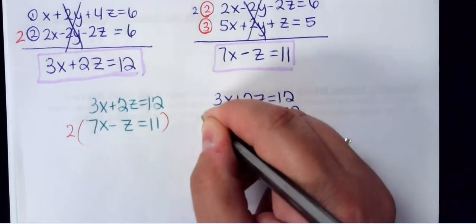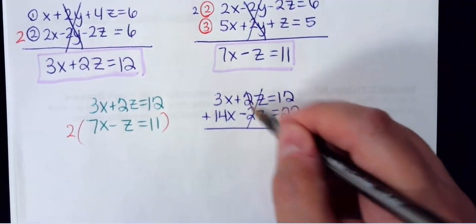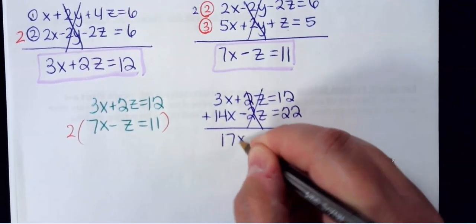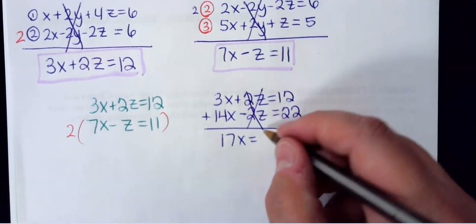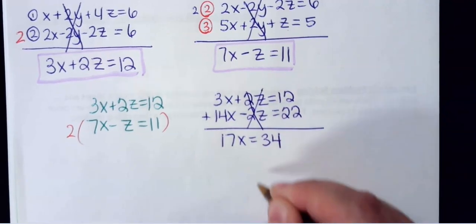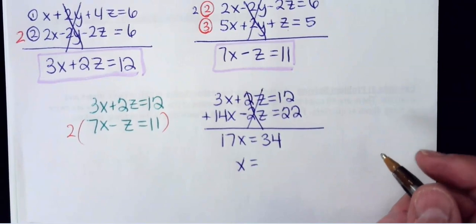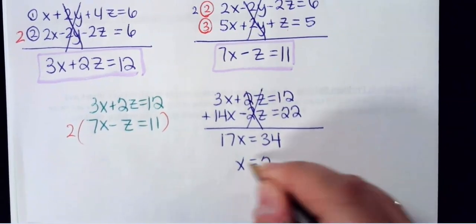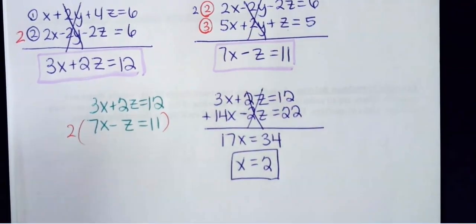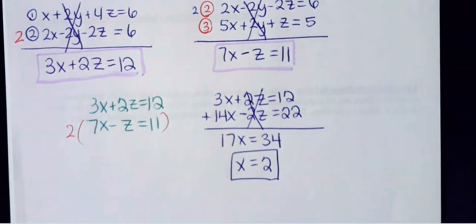The z's are now opposite, so I add the lines: 3x plus 14x gives 17x, and 12 plus 22 gives 34. So x equals 2 — a nice number. I promise for your problems I won't give anything with decimals; you'll get nice integers. If you get a decimal, you probably made a mistake somewhere.